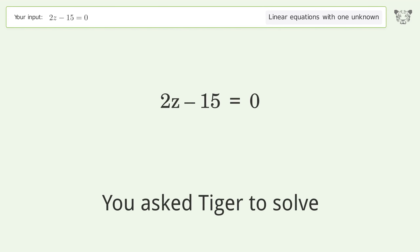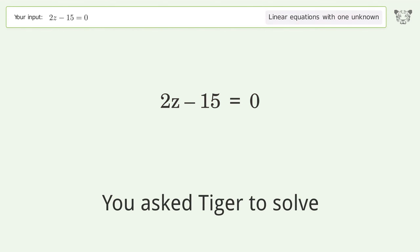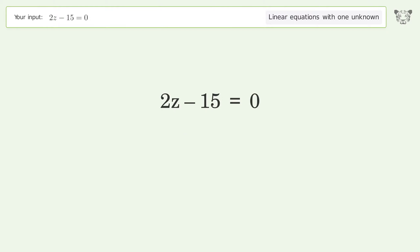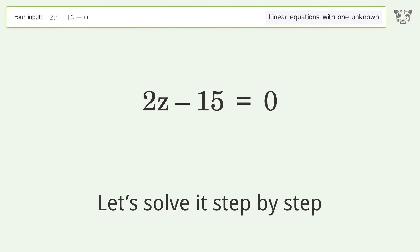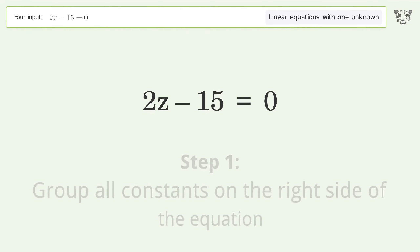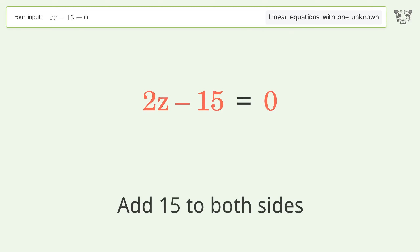Tiger solves a linear equation with one unknown. The final result is z equals 15 over 2. Let's solve it step by step: group all constants on the right side of the equation, add 15 to both sides.